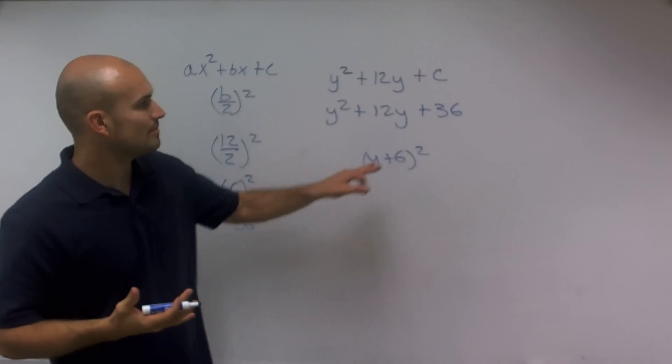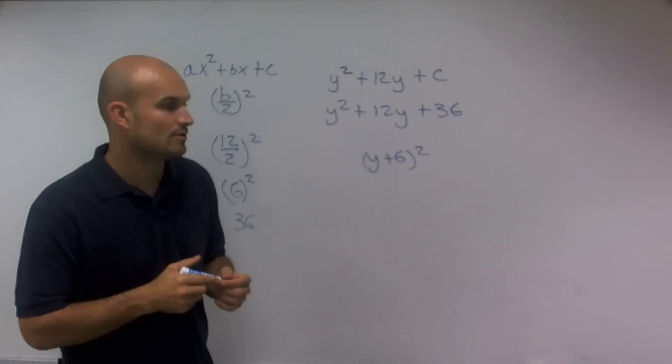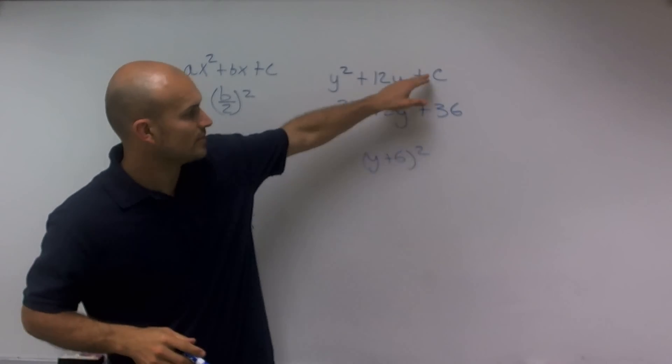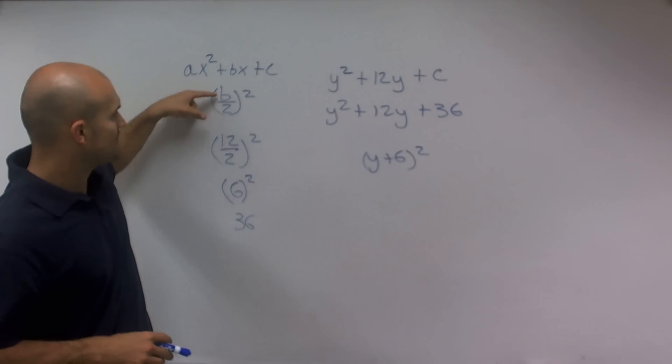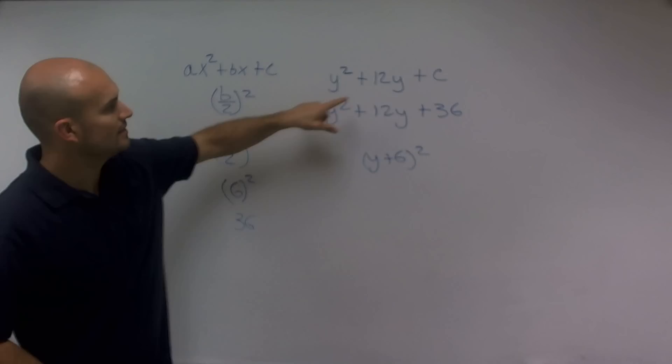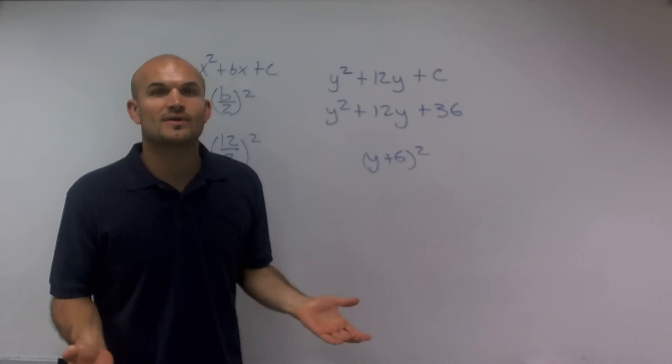But for right now, this problem just asks us what is our value of c that will complete the problem for completing the square. And all I need to do is just take my b divided by 2, square it, and I get c will equal 36. All right, that's it. Thanks.